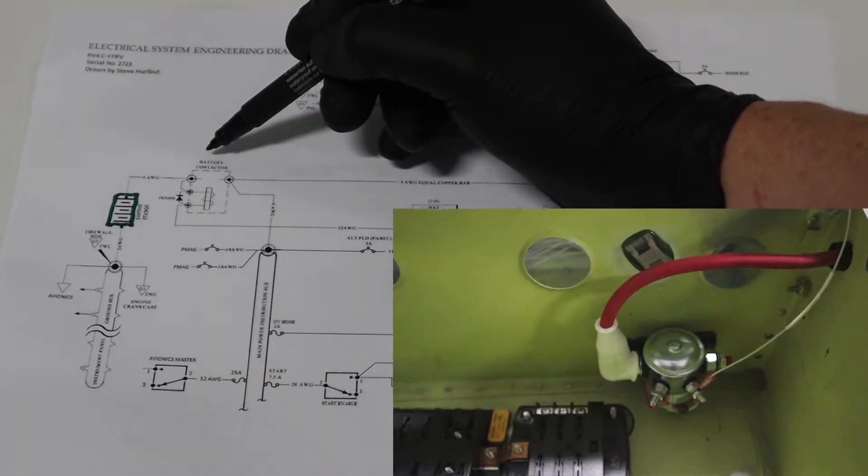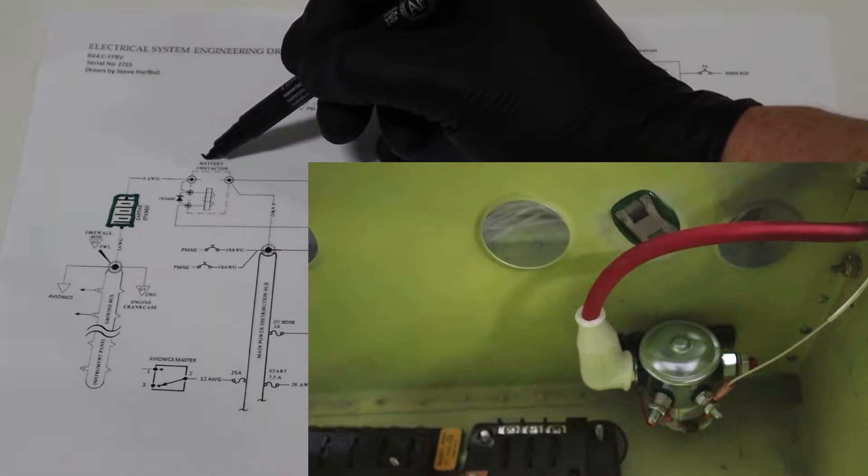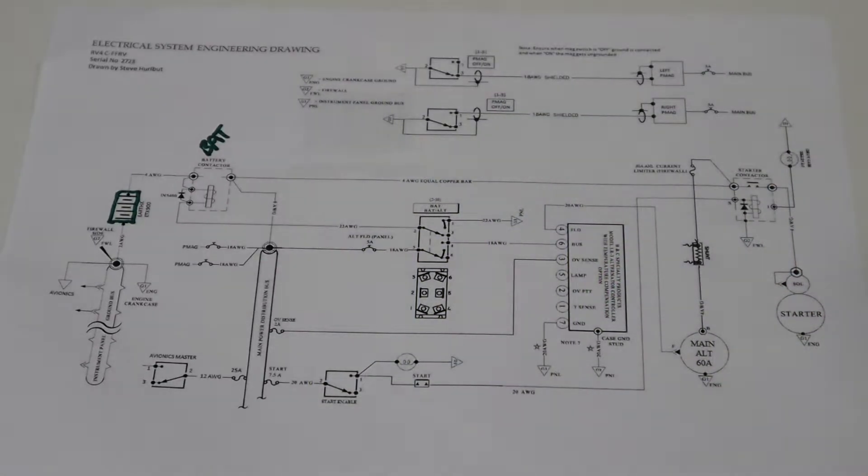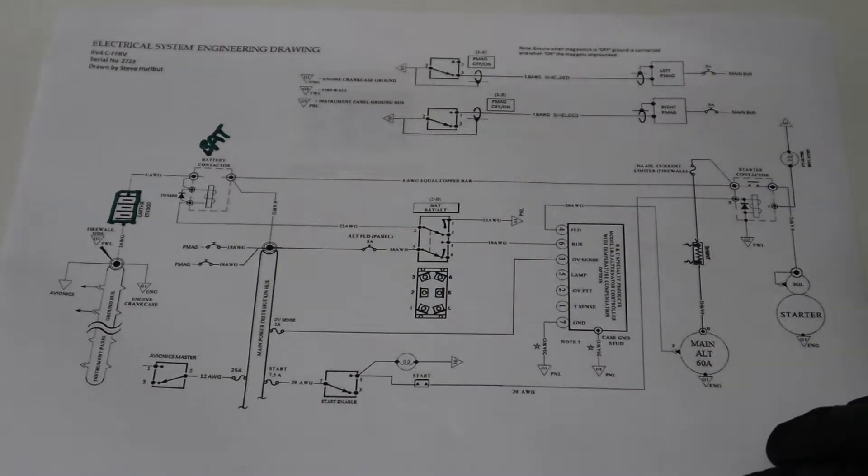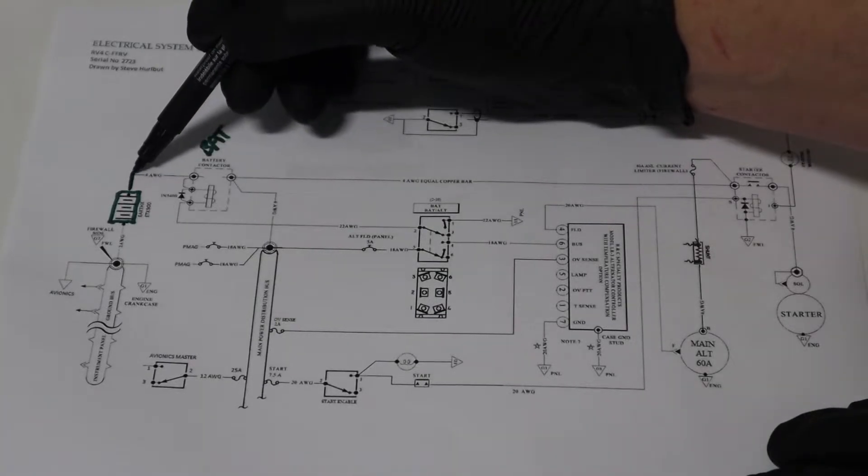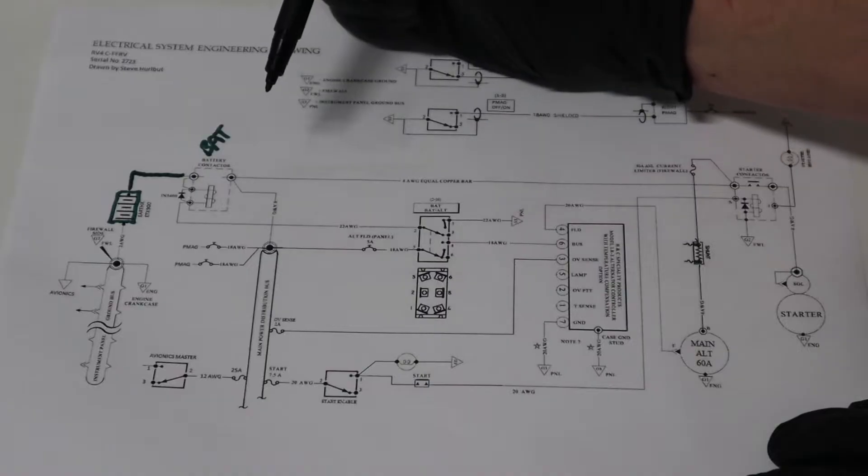And then we have the master relay, which is going to turn on the power to the aircraft. And in this case we have a wire going from the positive terminal on the battery to the battery post of the master relay.